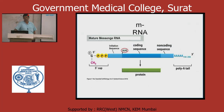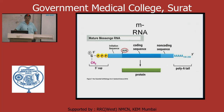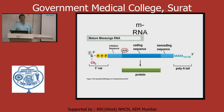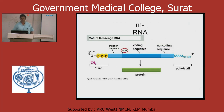AUG is a start codon. The coding sequence is on mRNA in a particular region, and that region will make the protein. This protein-coding mRNA starts with AUG. A few steps upstream of AUG there is an initiation sequence.